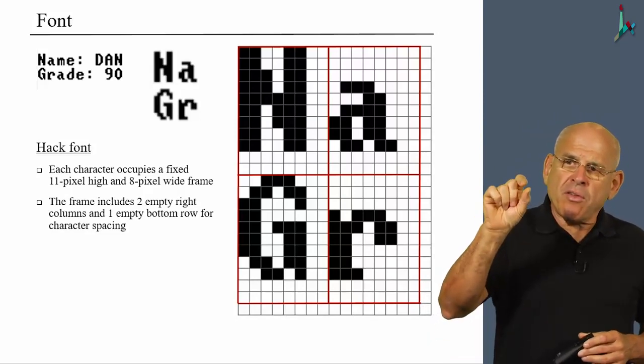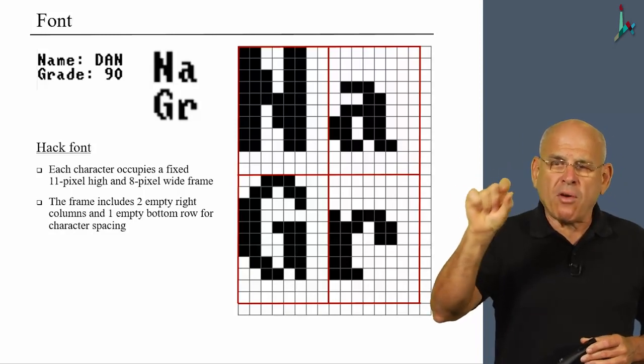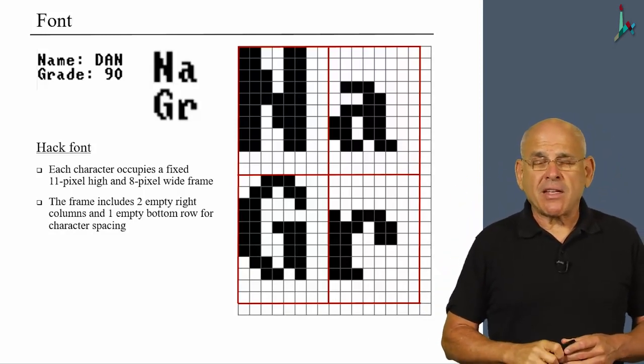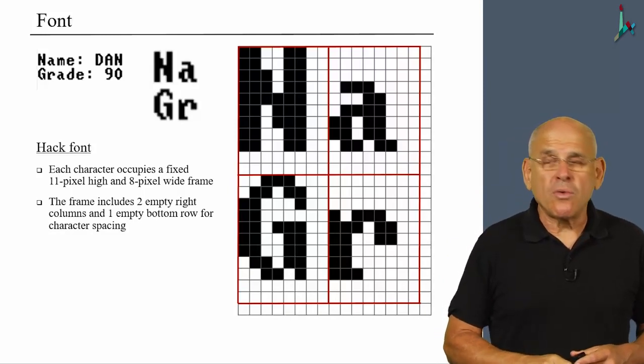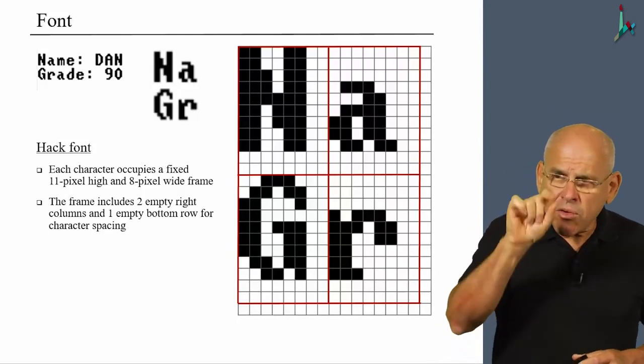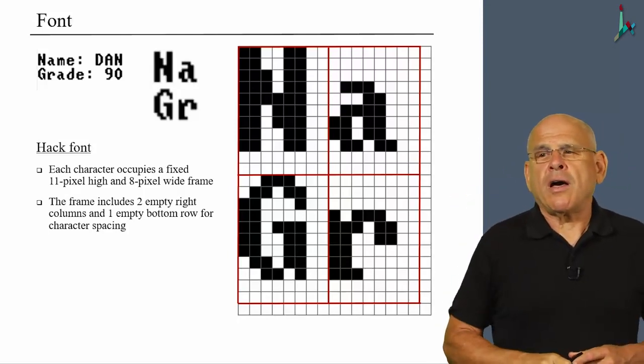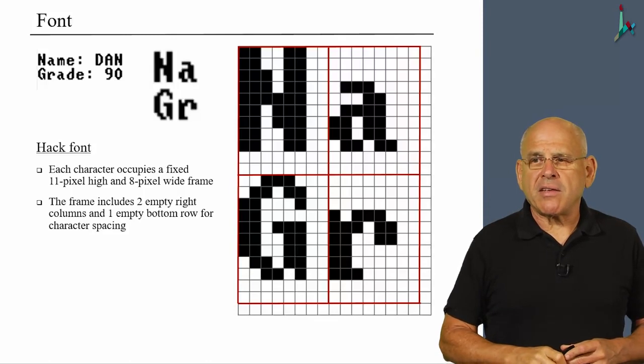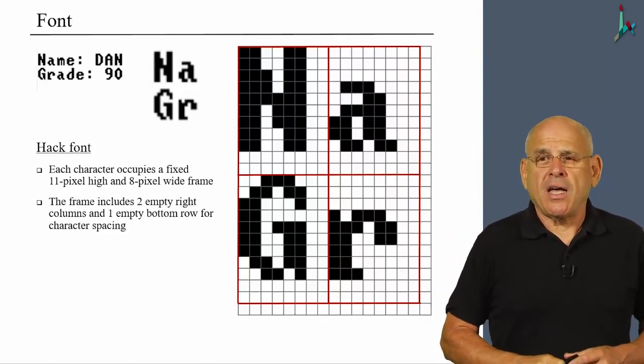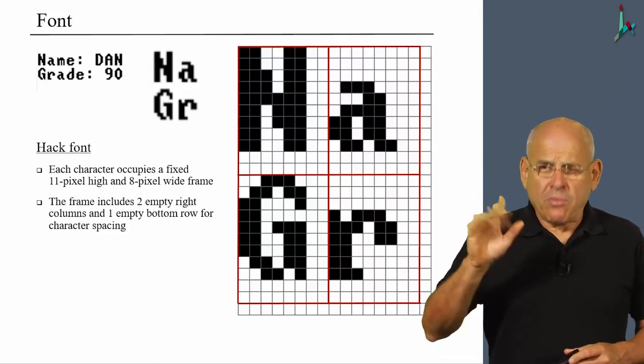And one row at the bottom for row spacing. Now, it may look to you that we have two empty rows at the bottom. But in fact, remember that we have letters like G and capital Q that have some tails going down. So we have to use one more row to handle these characters. These four characters don't happen to have any of these tails, so you don't see it here, but we'll see this later.